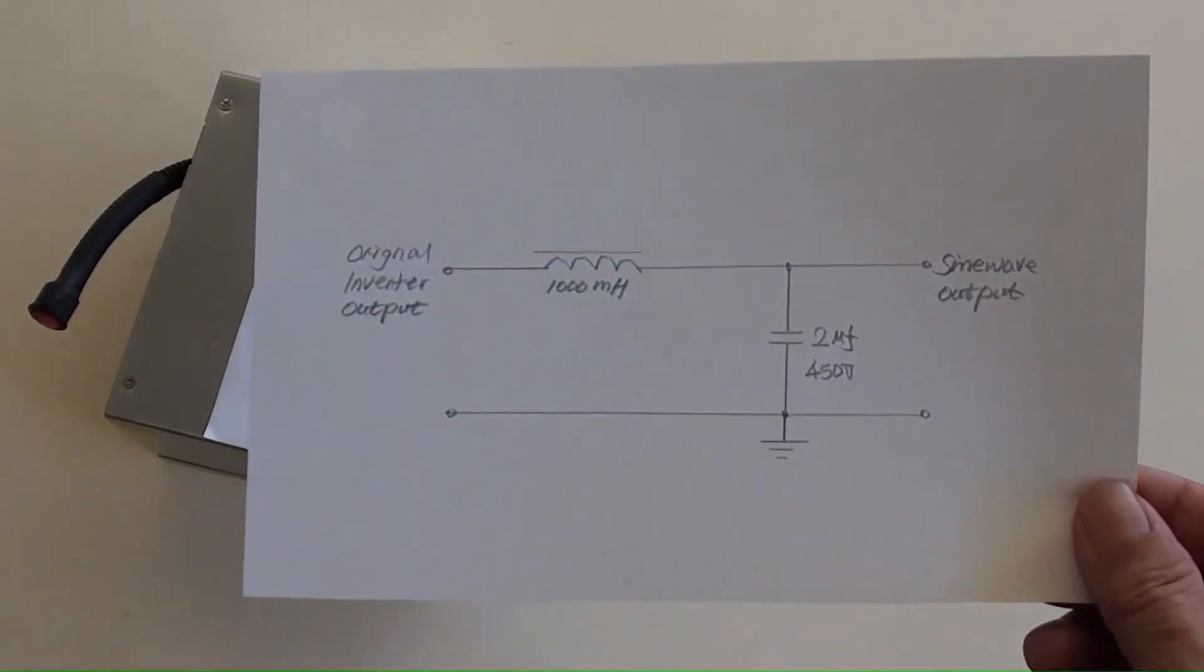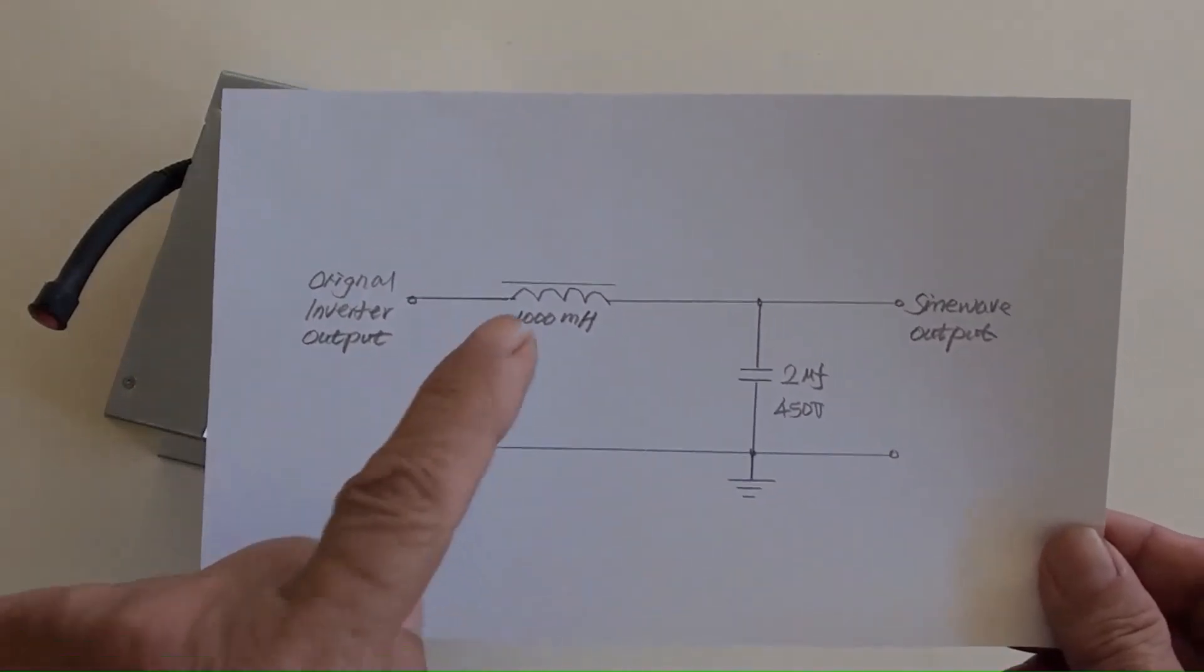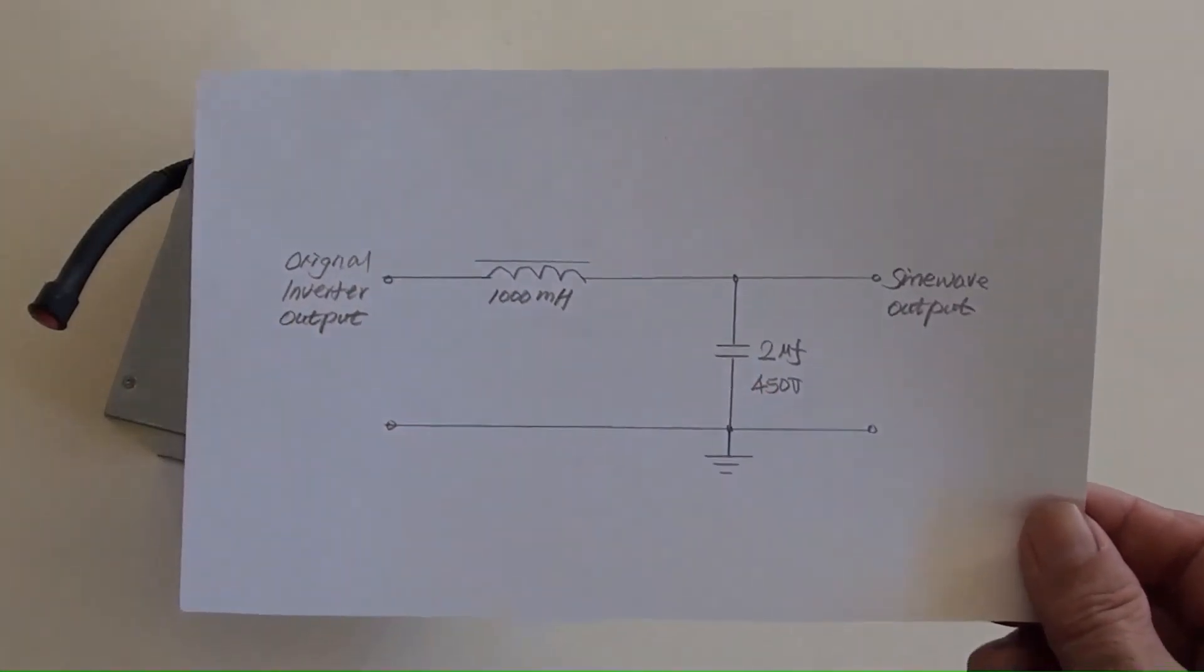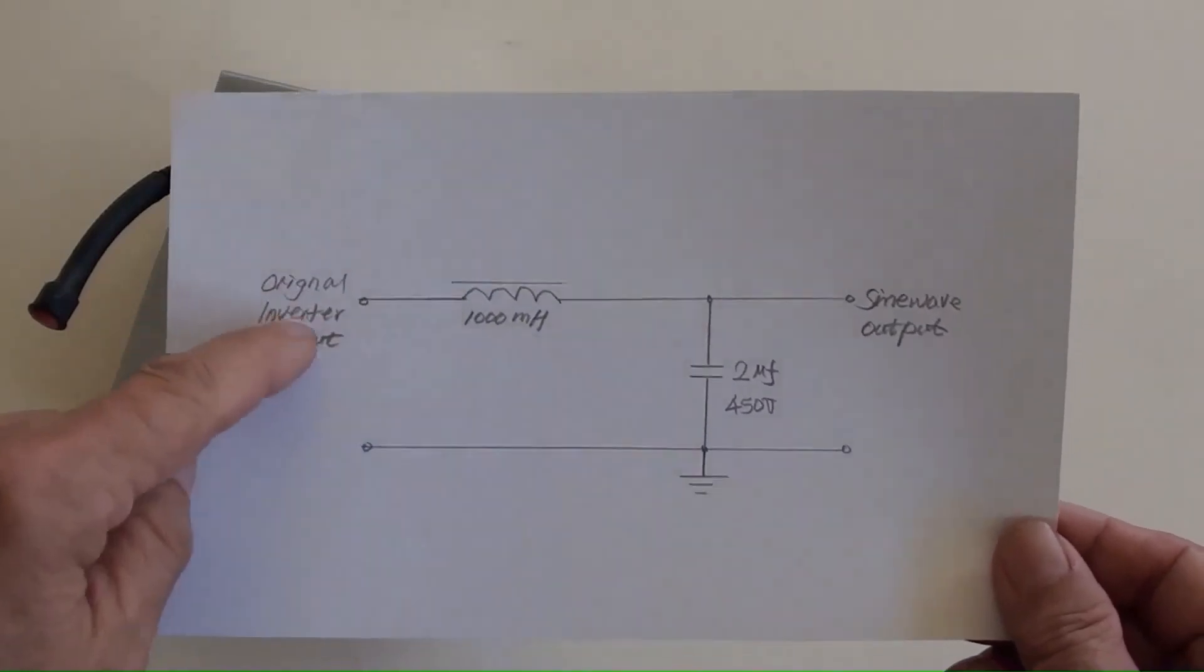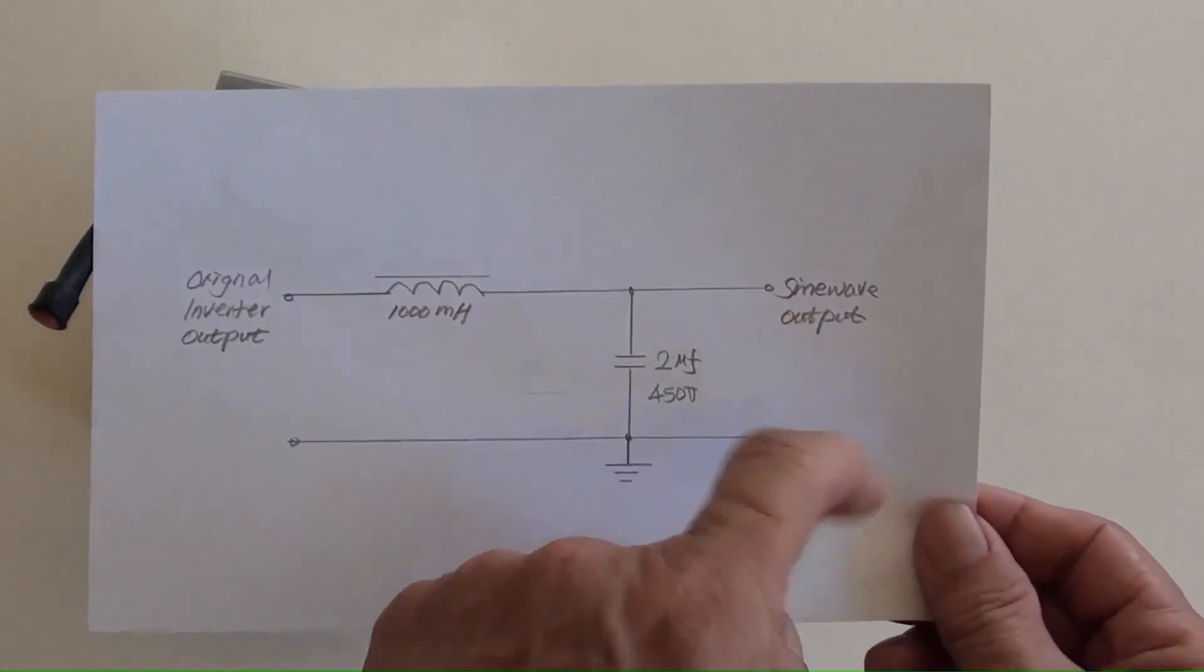In order to have it done, we need to add a 1000 mH inductor and a 2 mF capacitor, which forms a low filter circuit. Its left side connects to the inverter's output. Its right side will be the output of a sine wave.